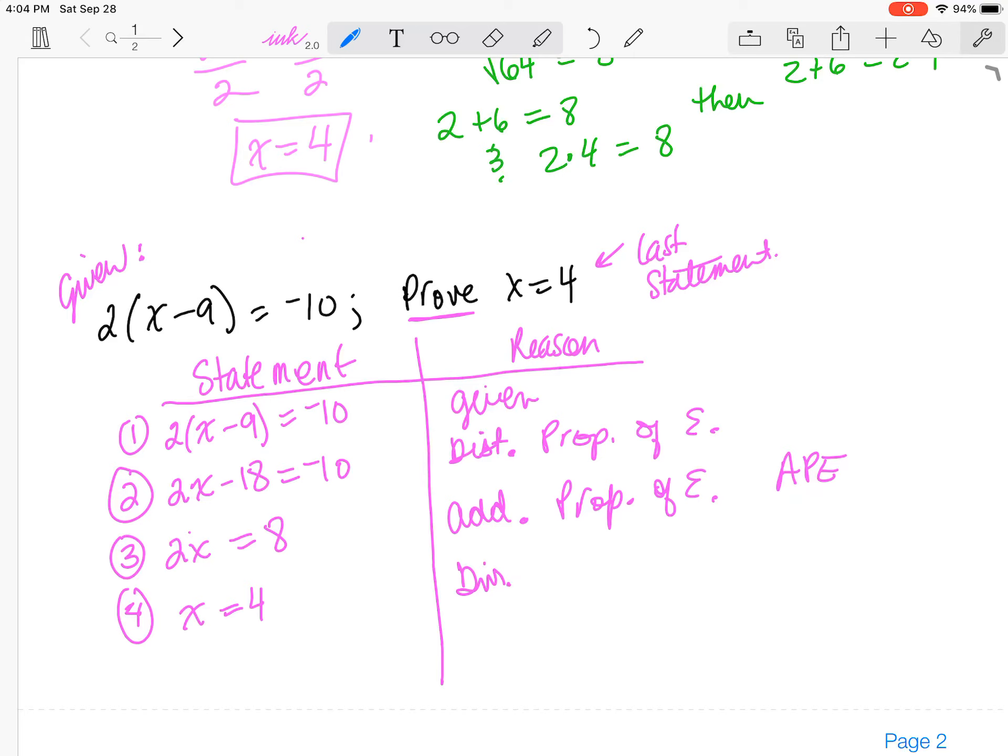And that's the division property of equality. And we're done. We proved, this is our last statement. So we proved we justified our equation using the properties of equality for x is equal to 4. And that's all you have to do to write a two column proof.